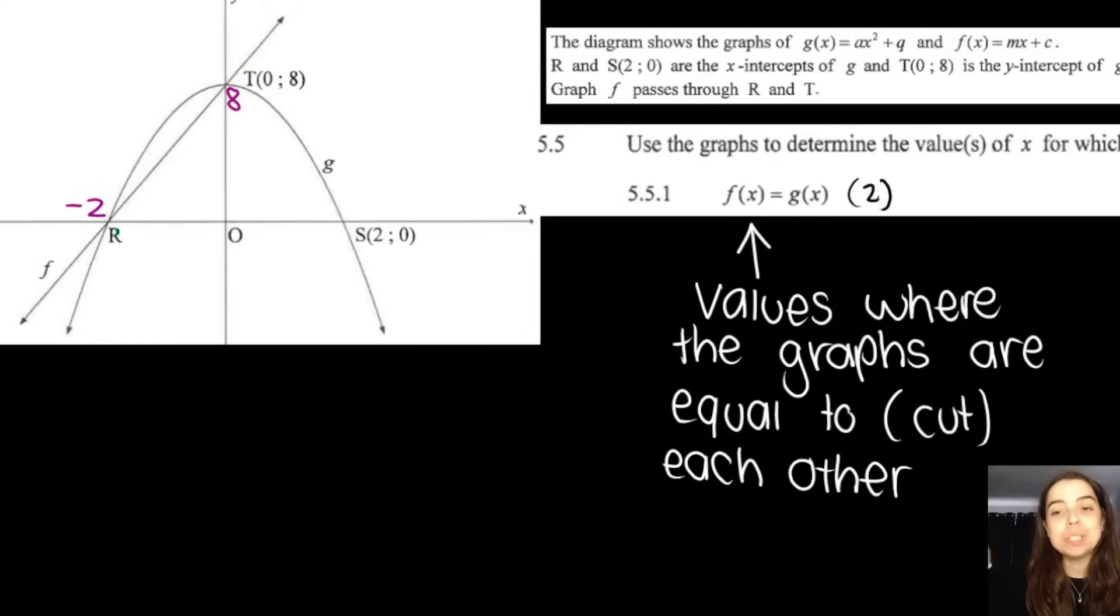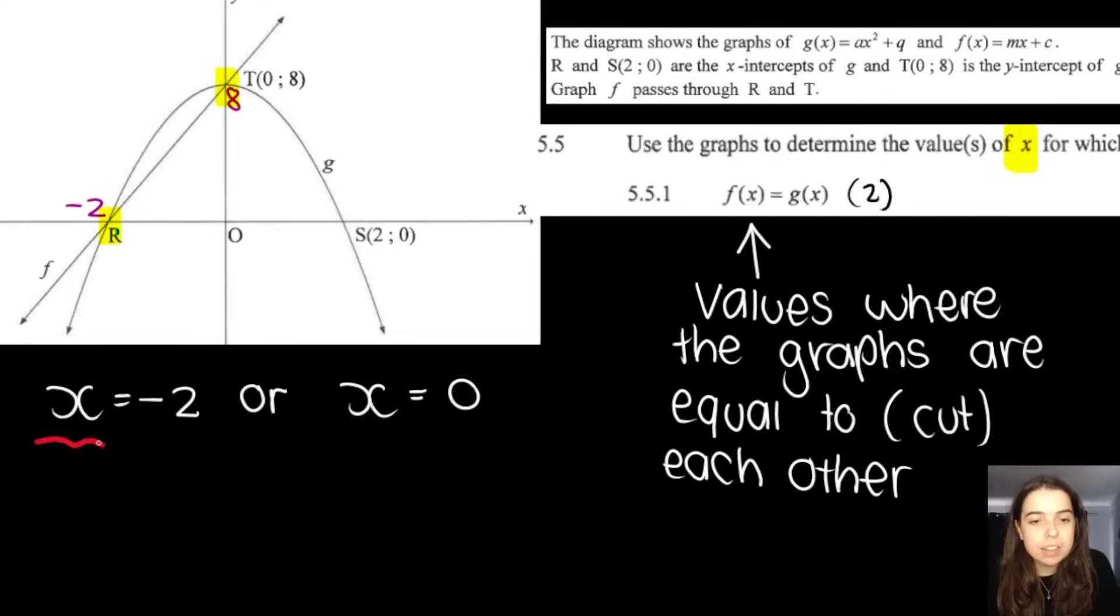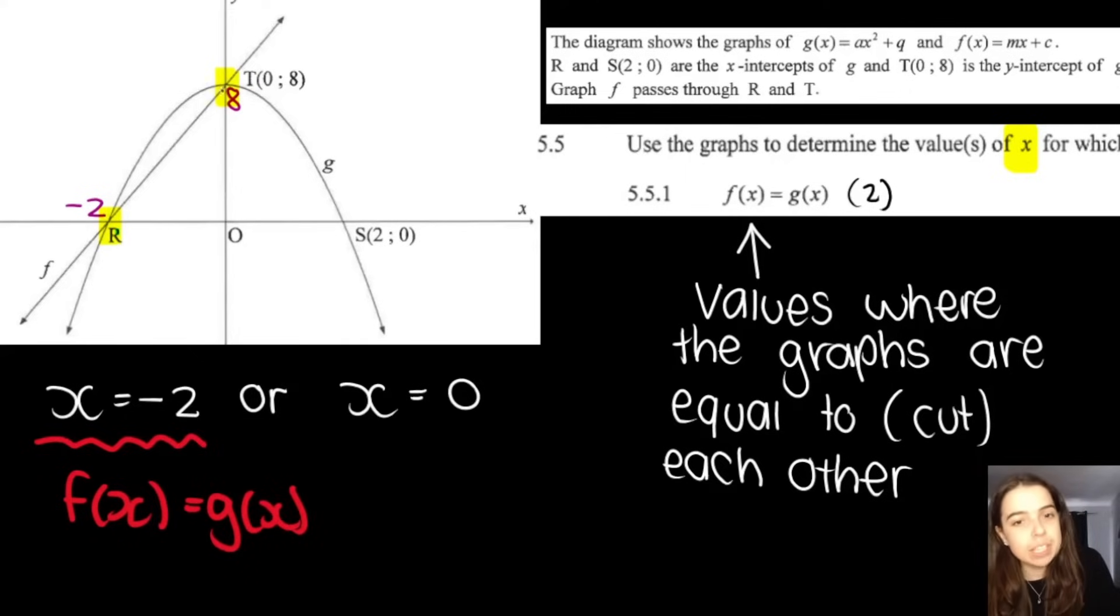In 5.5, this is our first relatively difficult question. They say use the graphs to determine the value or values of x for which f of x is equal to g of x. So where the graphs are equal to one another, where the graphs cut each other, where they intercept. We can see that the graphs intersect at two points. So I know that where x is negative two, that is the first point of intersection, the first point where f of x is equal to g of x. Same thing over here. This is my second point of intersection, but be careful they wanted x values. So it's where x is equal to zero. You have to mention both points in order to get your marks.